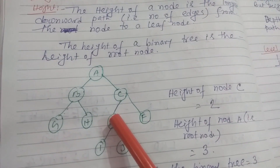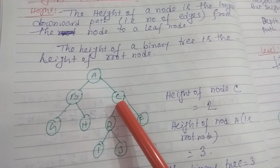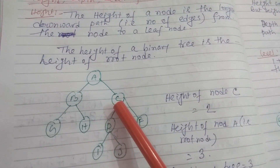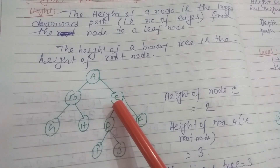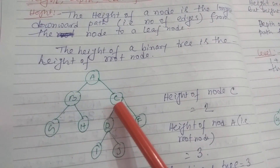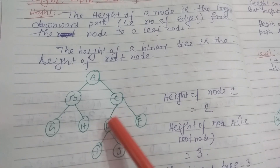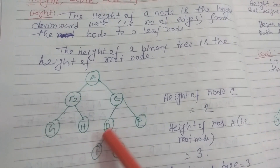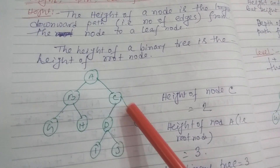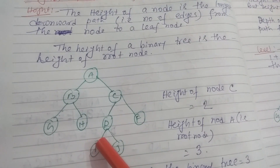In this tree, what is the height of node C? The height of node C is the longest downward path from the node to a leaf node. The longest such path is 2, so the height of node C is equal to 2.